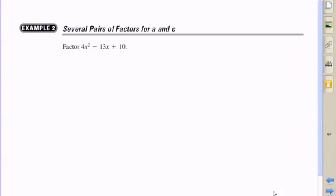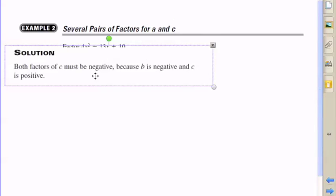So now we're going to factor a quadratic expression where we have several pairs of factors for A and C. I see that the expression is 4x squared minus 13x plus 10.